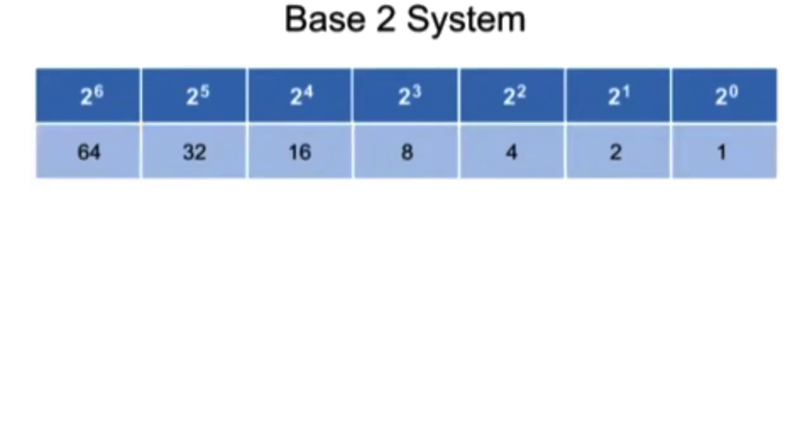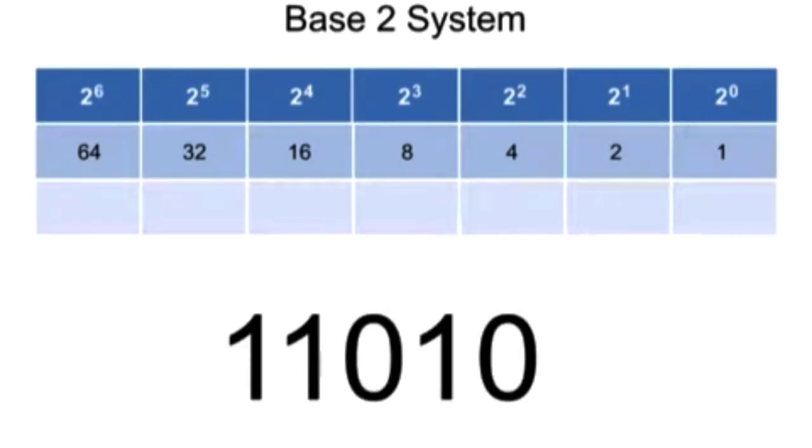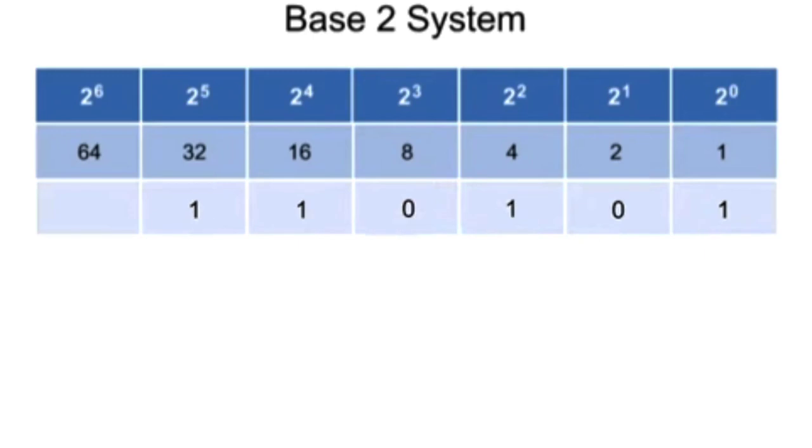When you work with digital equipment, converting between the binary and decimal numbering systems is often required. Let's take the binary number 1101101 and convert it to a decimal number equivalent. We will add together all the decimal number place values converted from a binary string.